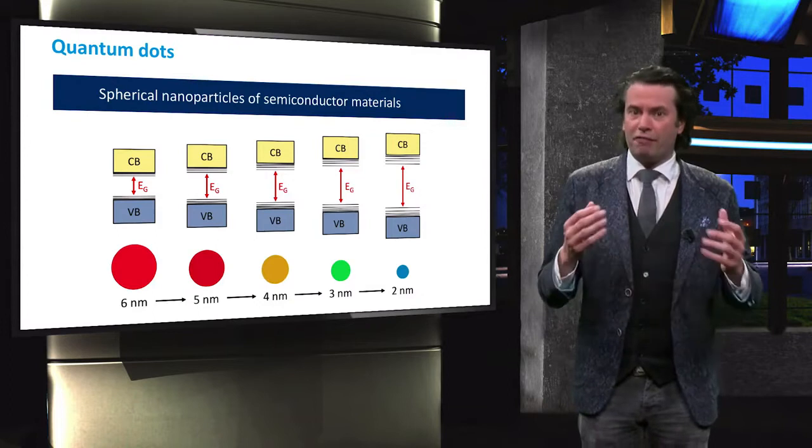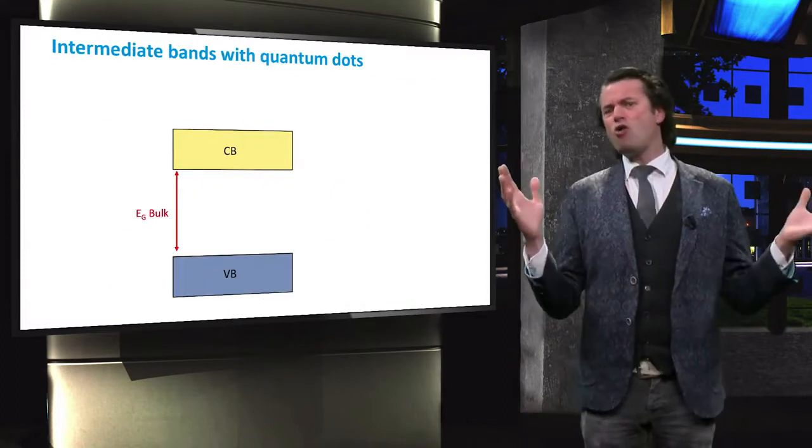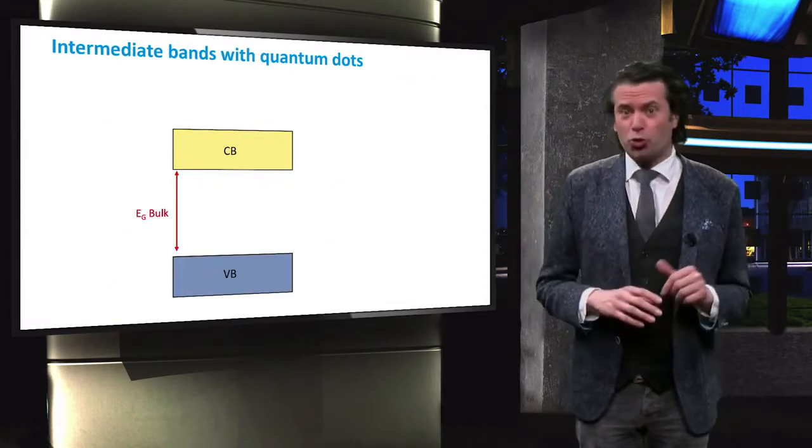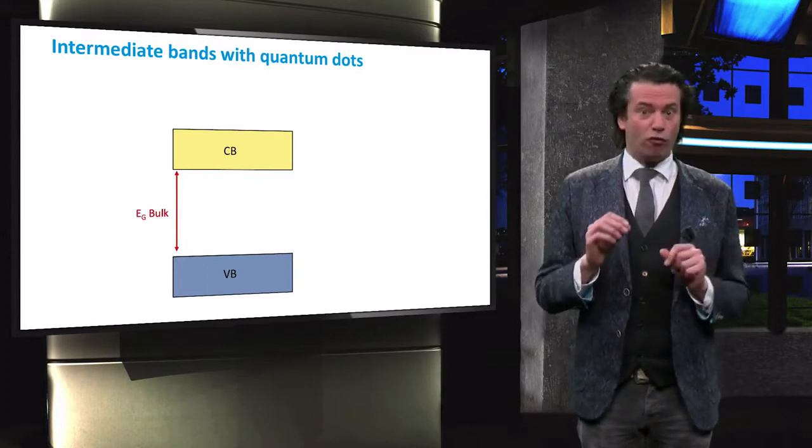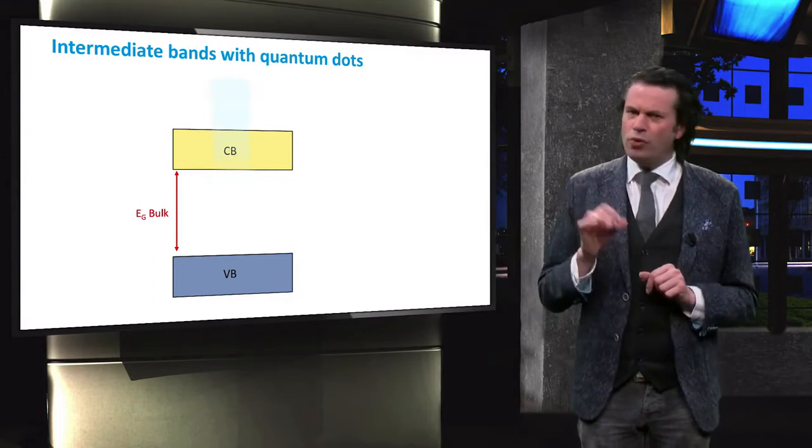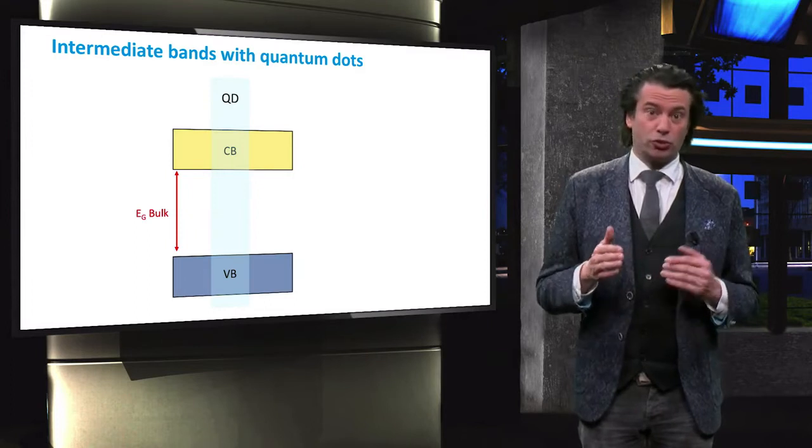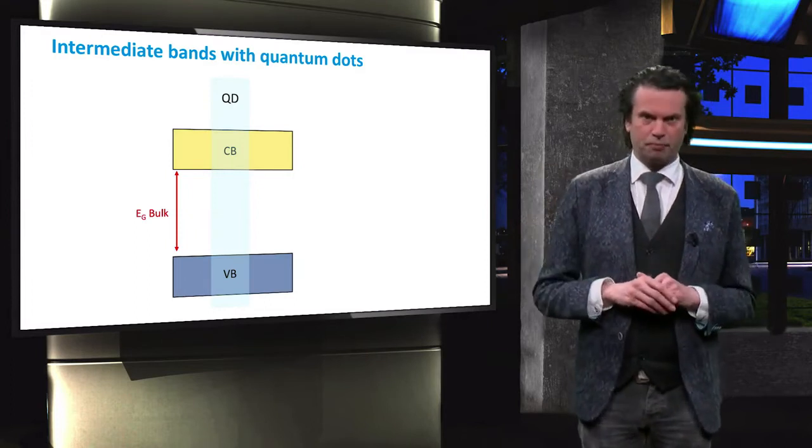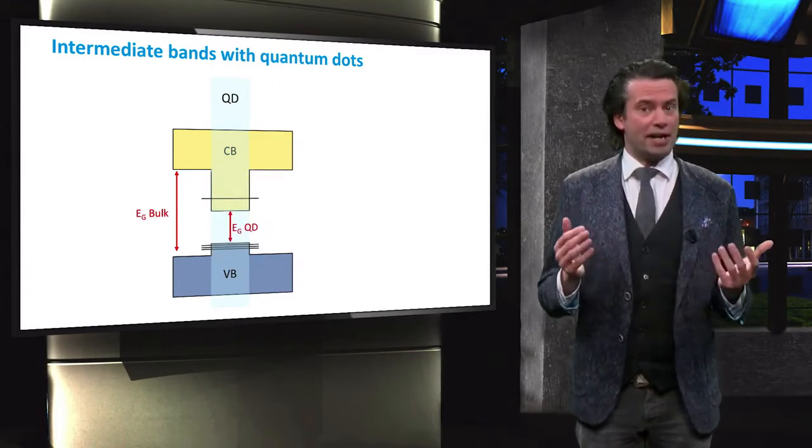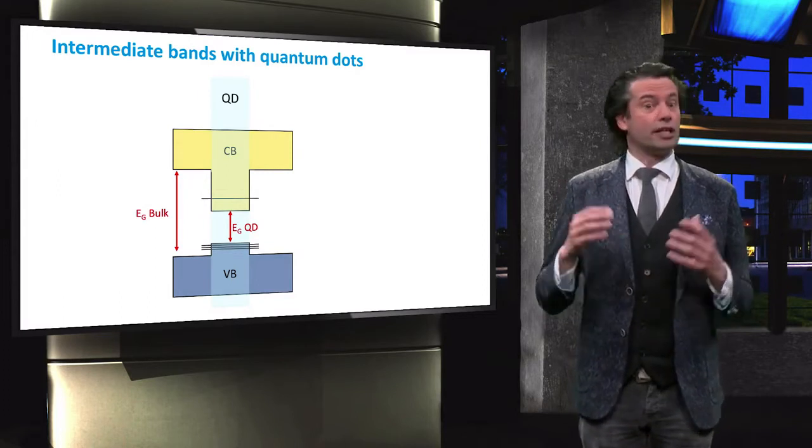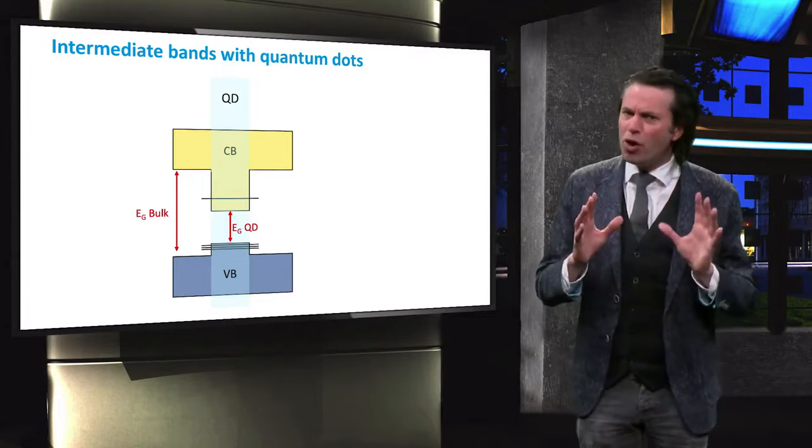Quantum dots are therefore investigated for several third generation concepts. But how can these quantum dots be used to create an intermediate band? This figure shows the band diagram of a bulk material. We now integrate a quantum dot with a low bandgap energy with respect to the bulk material in the bulk matrix. At the position of the quantum dot, energy states will be present in the bandgap of the bulk material that an electron can occupy. So what happens if we integrate a number of these quantum dots?